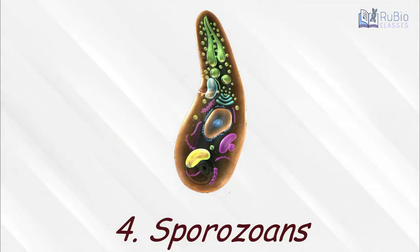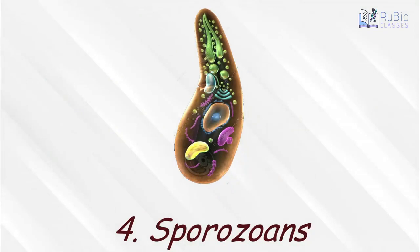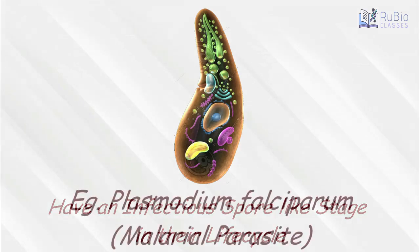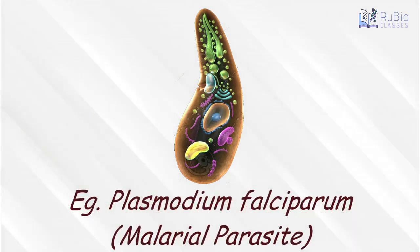Lastly, the sporozoans, which include diverse organisms that have an infectious spore-like stage in their life cycle. A very well-known example of sporozoans is Plasmodium, which is the malarial parasite.